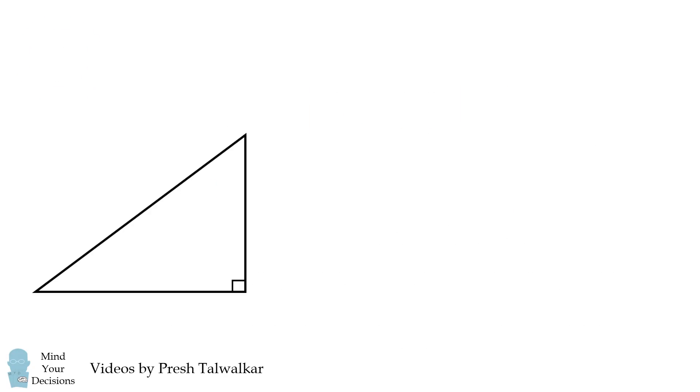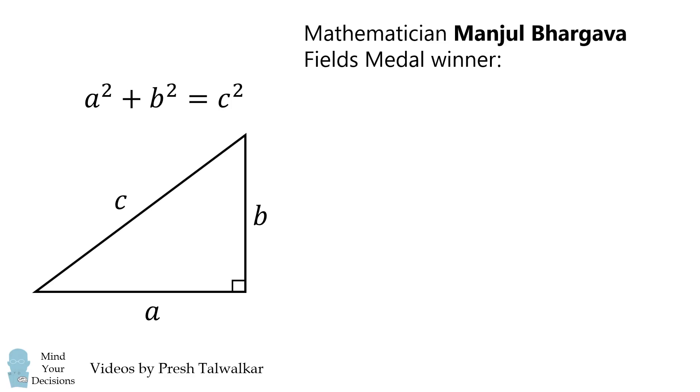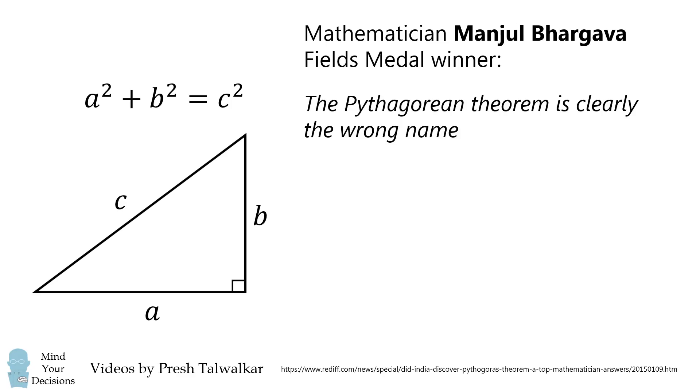In a right triangle with legs of a and b and a hypotenuse c, we all know that a squared plus b squared is equal to c squared. But what should this rule be called? According to mathematician Manjil Bhargav, who's a Fields Medal winner, the Pythagorean theorem is clearly the wrong name.